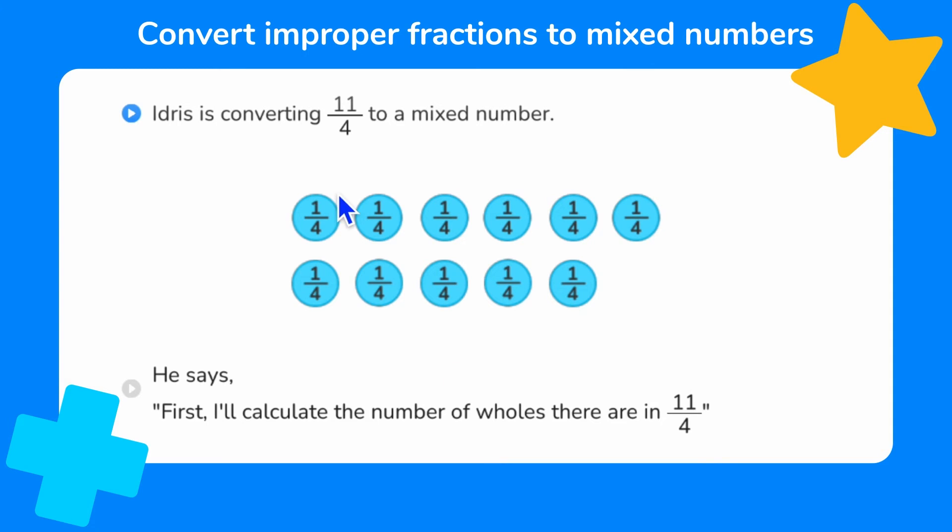Now Idris is converting 11 quarters to a mixed number. And that's represented here by counters, each worth 1 quarter. So how many counters should there be to represent 11 quarters? That's right, there should be 11.